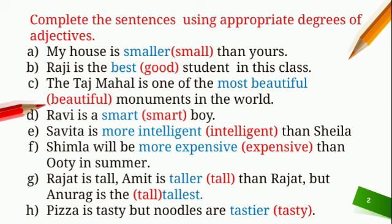Next sentence: Savita is dash intelligent than Sheila. Here again, two girls are talked about — Savita and Sheila. So our answer will be: Savita is more intelligent than Sheila.